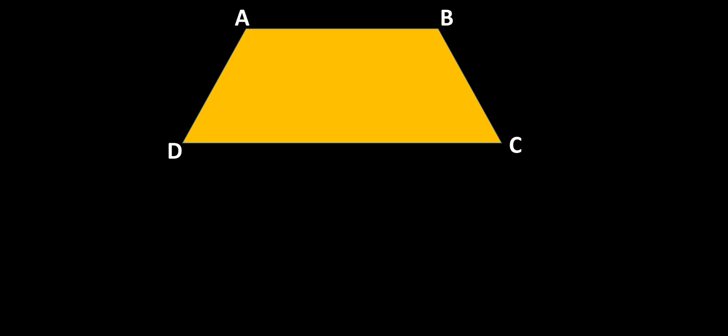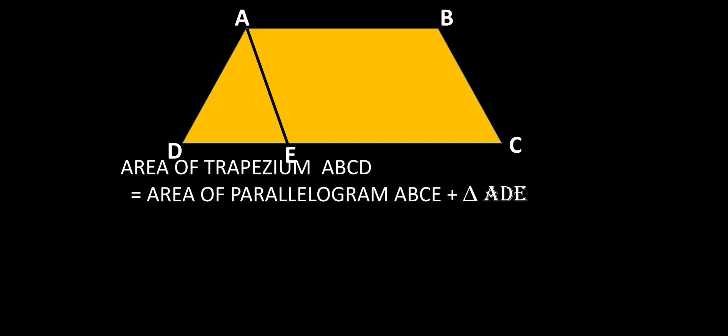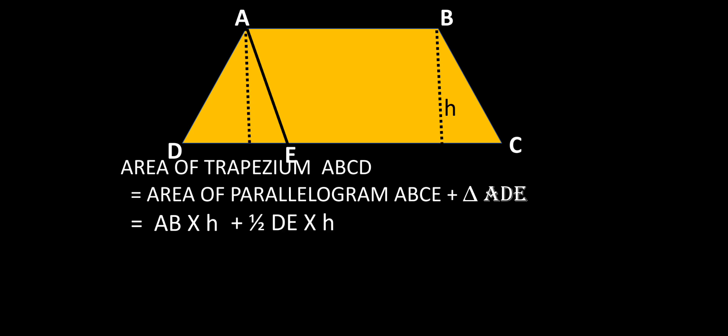In the third method, we split trapezium ABCD into a parallelogram and a triangle: triangle ADE and parallelogram ABCE. The area of the parallelogram ABCE is AB into H, where H is the perpendicular distance between the two parallel sides, which is also the height of this parallelogram.